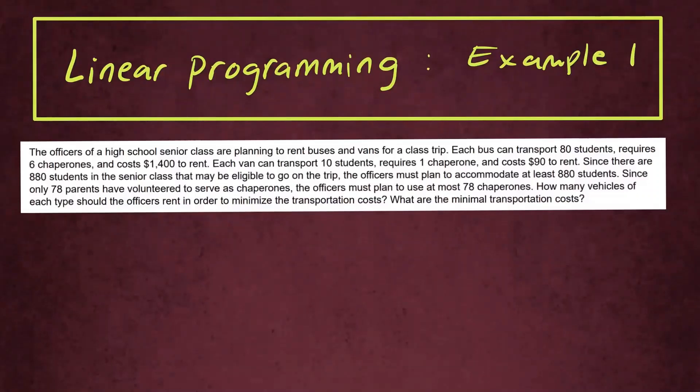Let's go ahead and work out this linear programming example. So the officers of a high school senior class are planning to rent buses and vans for a class trip. Each bus can transport 80 students, requires 6 chaperones, and costs $1,400. Each van can transport 10 students, requires 1 chaperone, and the cost is $90.